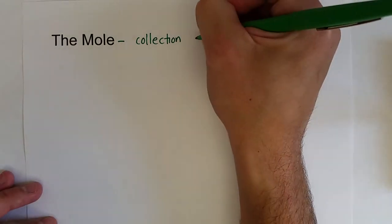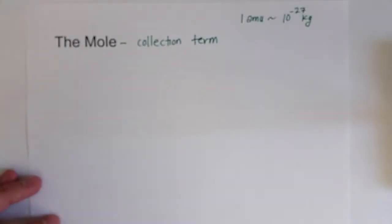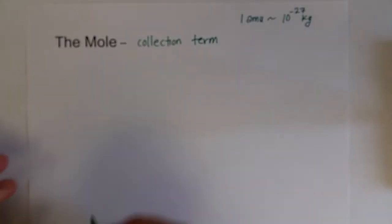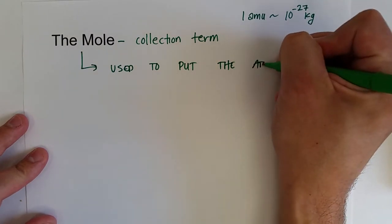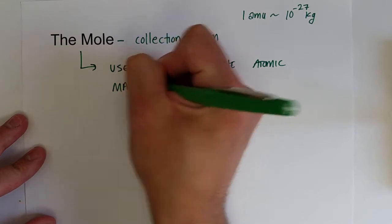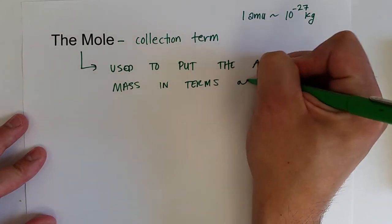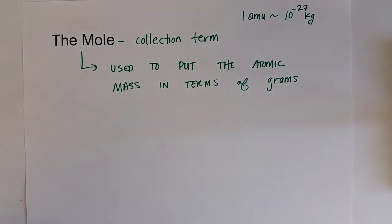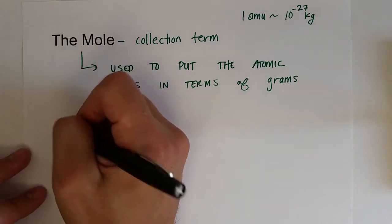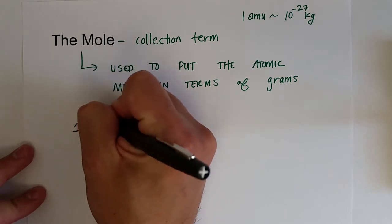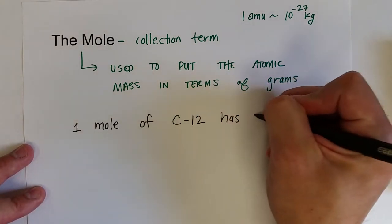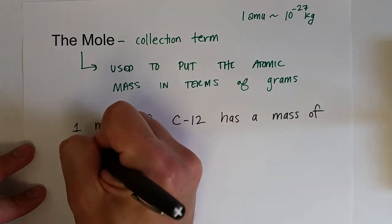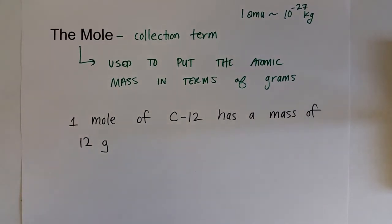The mole is sort of short for molecule — that's where it gets its name. But it really puts the atomic mass of individual atoms in terms of grams. It started off with the definition that one mole of carbon-12, the carbon-12 isotope, has a mass of 12 grams. That's the relation between the mole and the atomic mass.